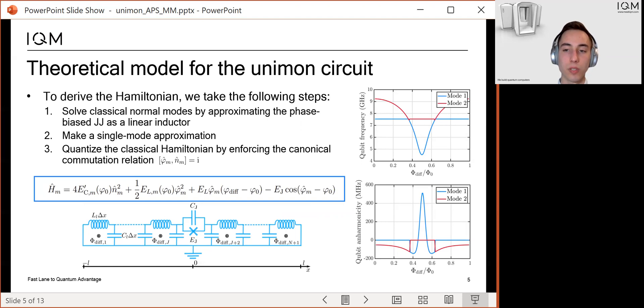In this example, the sweet spot corresponds to an enhanced anharmonicity of plus 500 megahertz. And this is the optimal operating point of the Unimon.